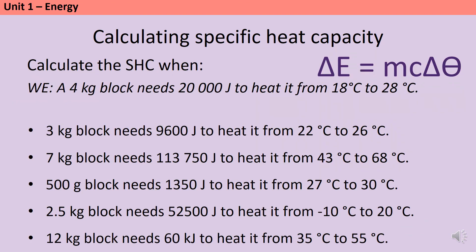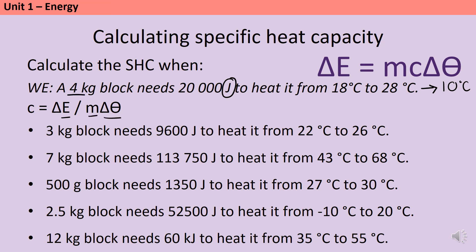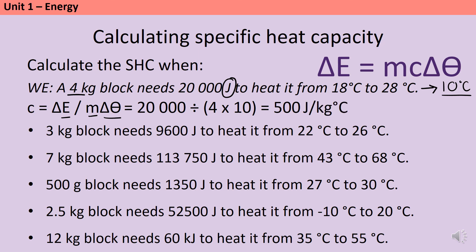Here's one more worked example and then five questions for you to have a go at. We have a four kilogram block that needs 20,000 joules of energy to heat it from 18 to 28 degrees C. Using the rearranged equation, the temperature change is 10 degrees C. Substituting in: 20,000 divided by four times 10 — because both are on the bottom of the fraction — gives an answer of 500 joules per kilogram degree C.